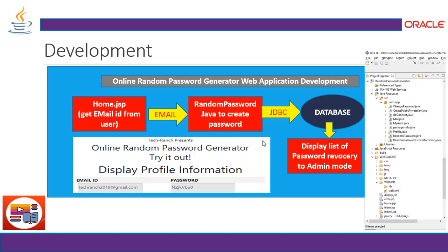The next important thing is the admin role. Sometimes a user forgets their random password — it's a little tricky to recover it securely. The system can send the password to the user's email and ask them to change it. This is what the admin mode is for: it displays the profile information for the admin only.